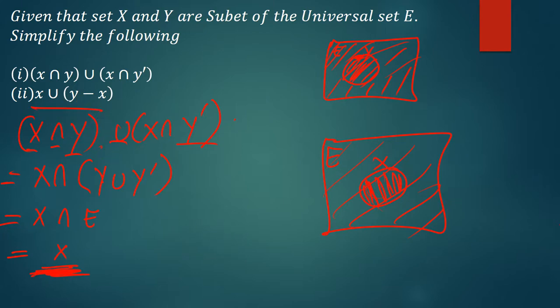Let's look at the next one. This one is also simple and straightforward. We have x union, then we have y minus x. What you have to understand is that if we say a minus b, this one is just the same as a intersection b complement. So while there is y minus x, I can write y intersection x complement.